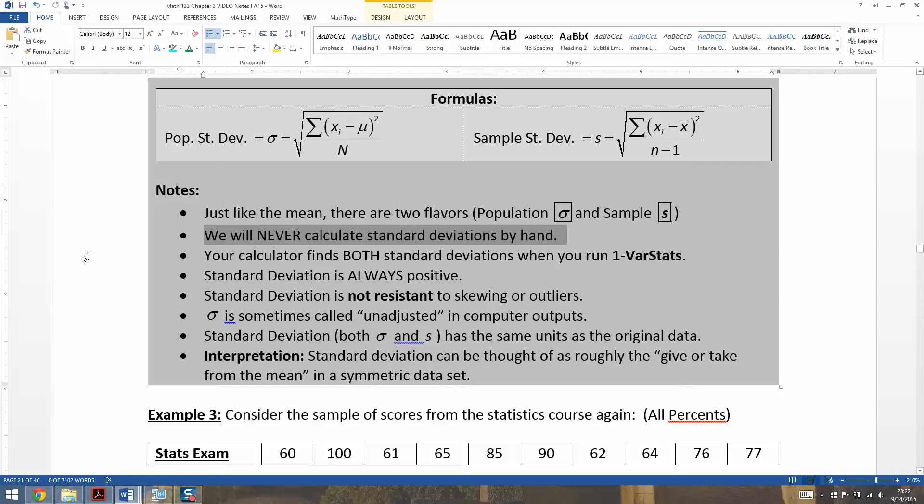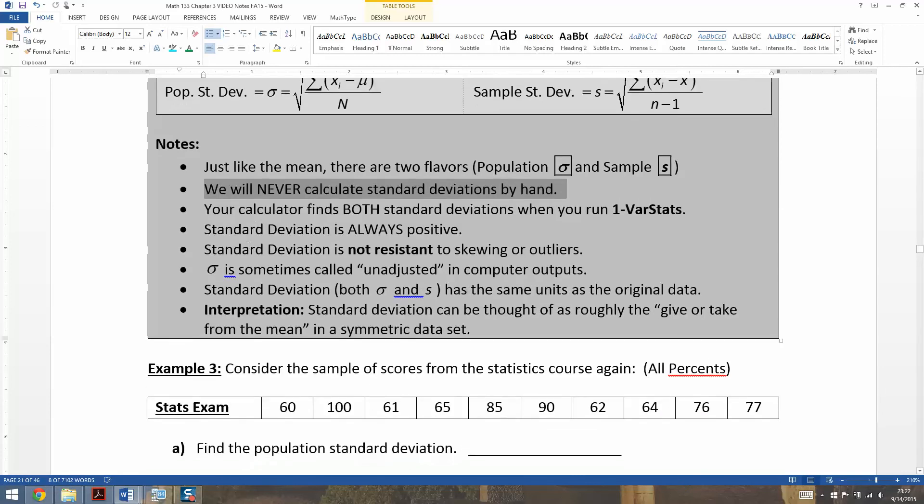Speaking of which, that leads me to the other point, which is we are never going to calculate this by hand. Never, never, never. You're welcome. It's not really worth our time. You saw basically what it is. It's the deviations, squared, add them all up, divide by how many there are, or how many there are minus one, and then take the square root of it. Your calculator finds both of them, and I'm going to show you that when we are going to do it down here for this stats exam.